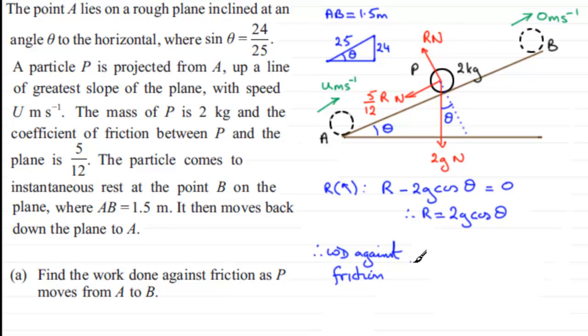is equal to that force, 5/12ths R. R is 2g cos theta, so we've got 2 multiplied by g. We'll take g as 9.8. Now,